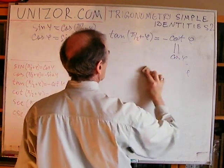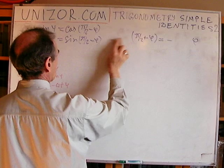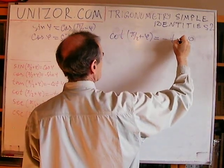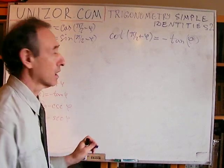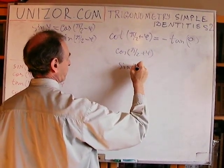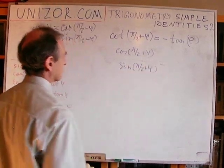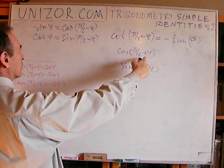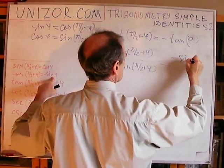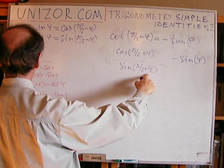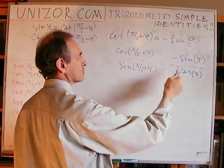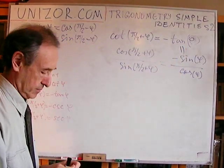Next is cotangent equals minus tangent. Exactly the same thing. What is cotangent? It's a cosine over sine. By definition, equals cosine of phi over 2 plus phi is minus sine, minus sine of phi. Sine of phi over 2 is cosine. Now, what is sine over cosine? It's tangent and minus sign. Here it is. So there it goes. That's the proof.